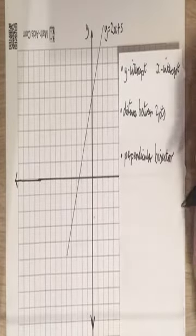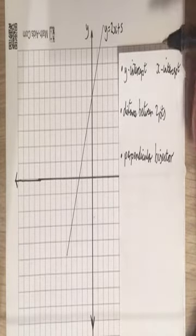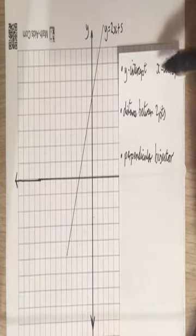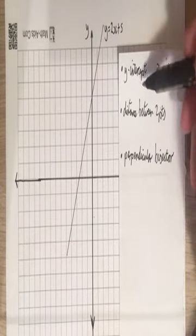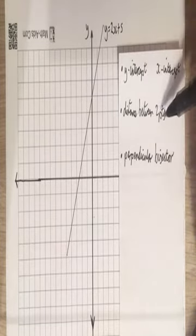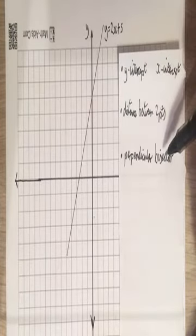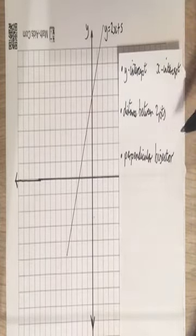Lines lesson three. The ideas here: we want to learn about y-intercepts and x-intercepts — just review that really — the distance between two points, and perpendicular bisectors. Sounds like an amazing kind of dinosaur. Let's get started.